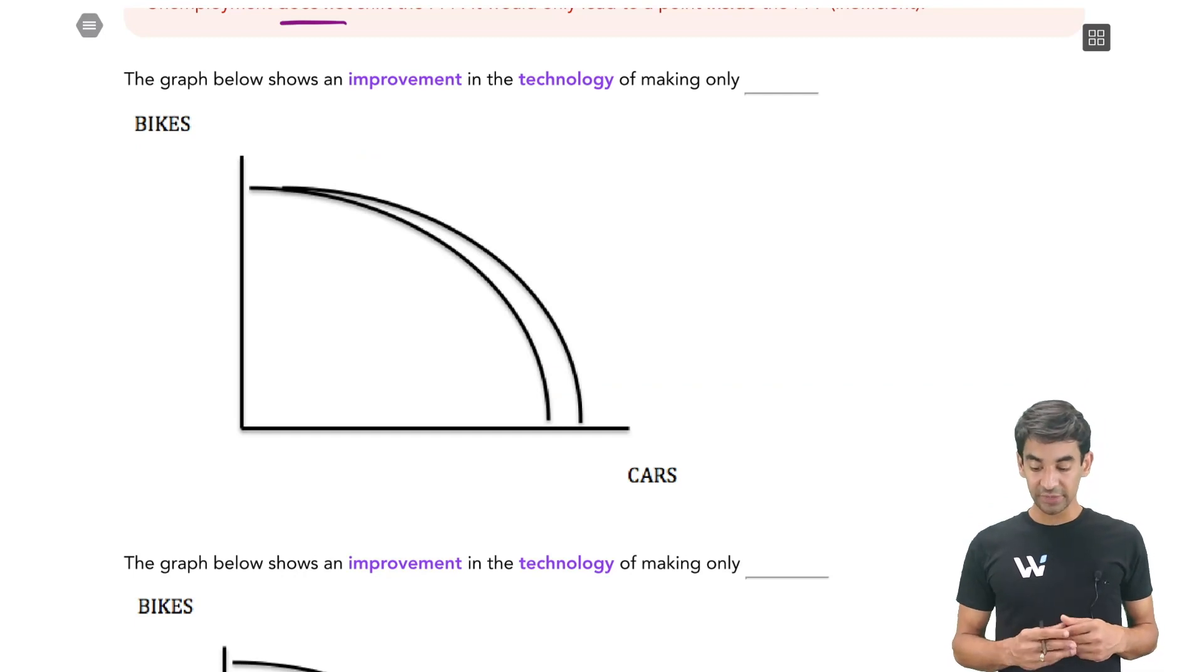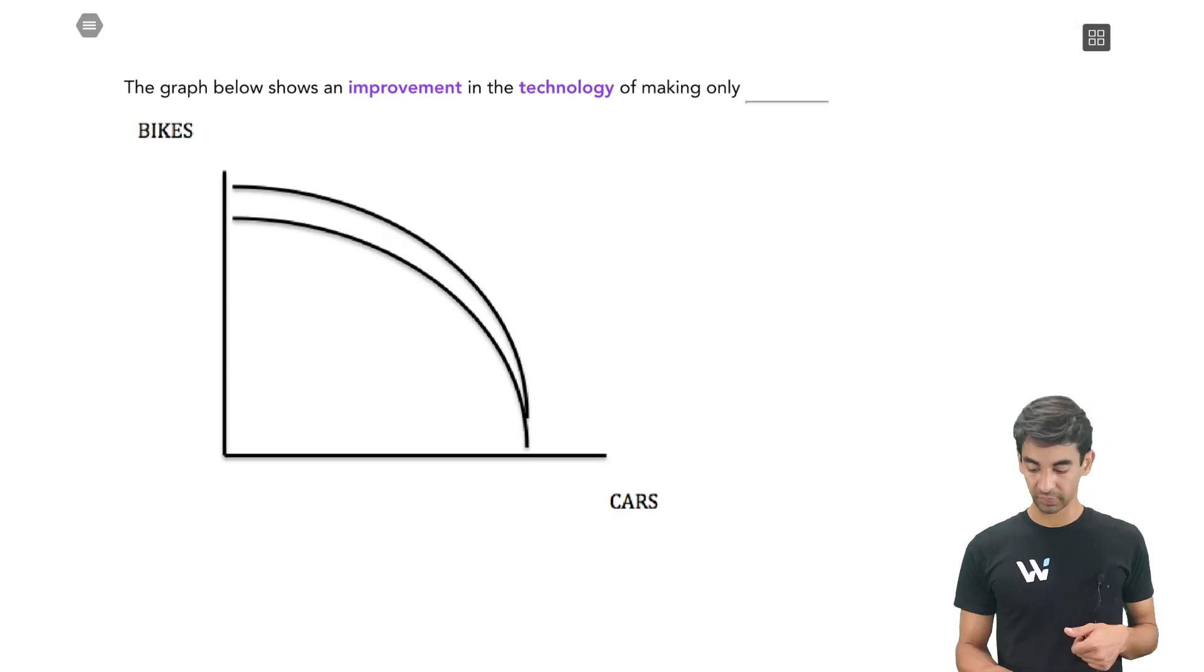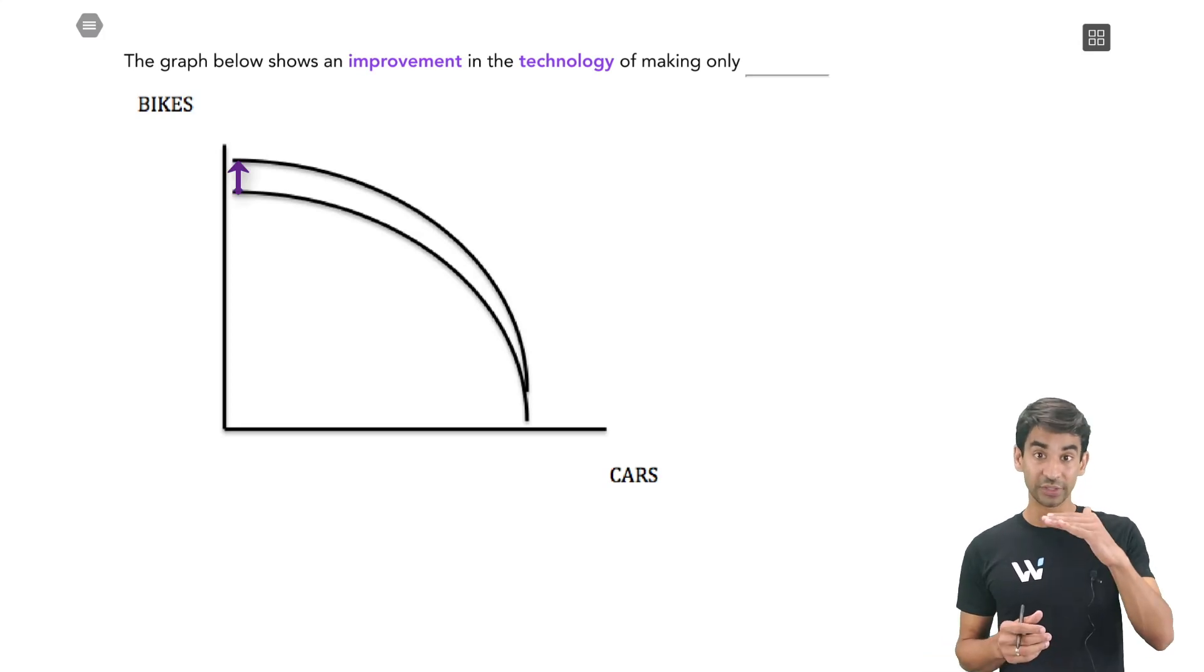Underneath, in the graph below, it says if there is an improvement in the technology of making only blank. Well, in this diagram, we can see that it's not shifting. It's just rotating to the right here. So that means we're just making more cars. The number of bikes didn't change on the intercept. So that means there must have been an improvement only in the technology used to make cars. And below that, it's the opposite. Now it's rotating upwards. So that means there must have been an improvement in the technology of making bikes.